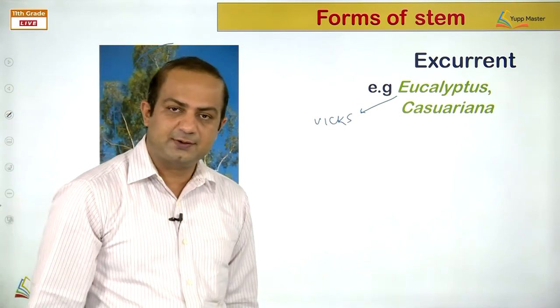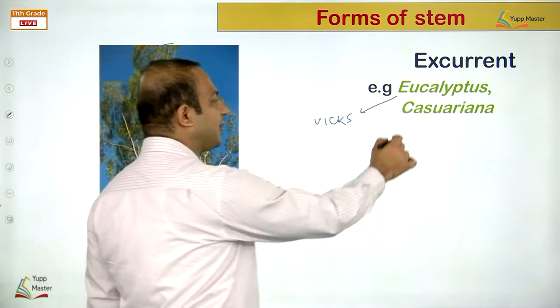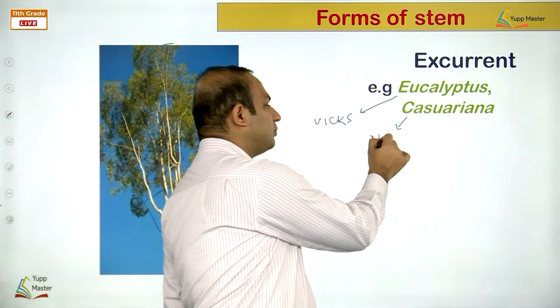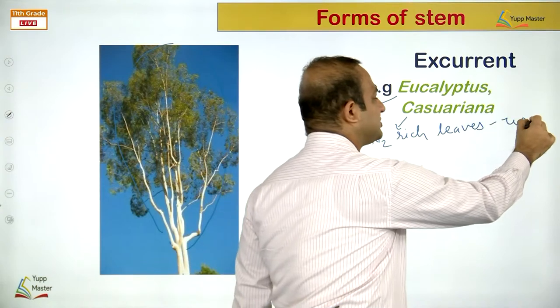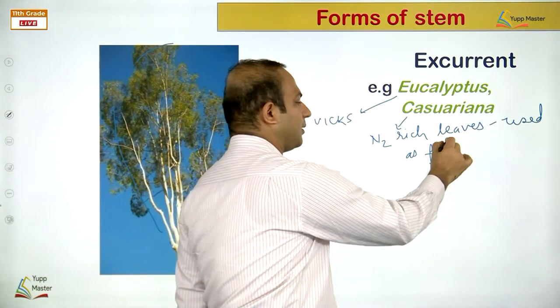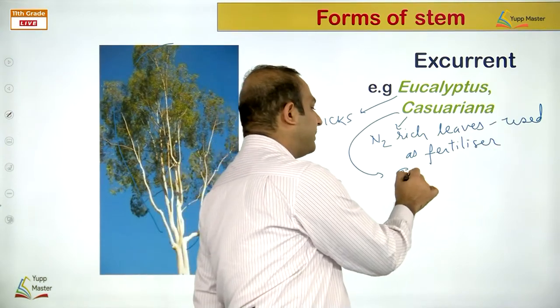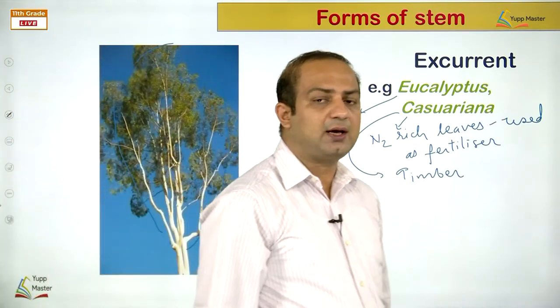Root-led climbers, hook climbers, and tendril climbers all have an organ for climbing. Twinners do not. Now we are up to the topic of modification. We have studied forms of stem and modification of bud. We will now study sub-aerial modifications of stem. These sub-aerial modified stems bear adventitious roots at the node and have buds — enabling faster spreading and vegetative propagation.